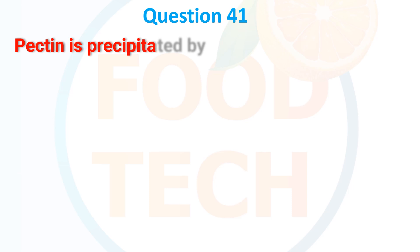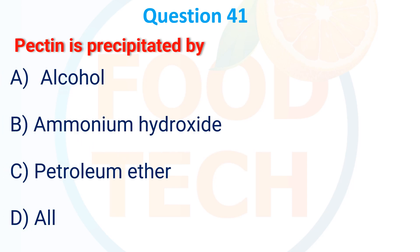Question 41. Pectin is precipitated by: A. Alcohol. B. Ammonium hydroxide. C. Pectinometer. D. All. The correct answer is A: alcohol.